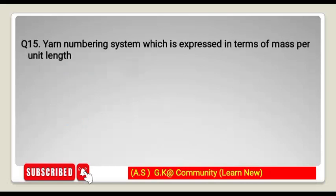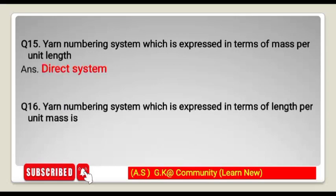Next question on yarn numbering systems: which system is expressed in terms of mass per unit length? It is the direct system. Which system is expressed in terms of length per unit mass? That is the indirect system. So mass per unit length is the direct system, and length per unit mass is the indirect system.